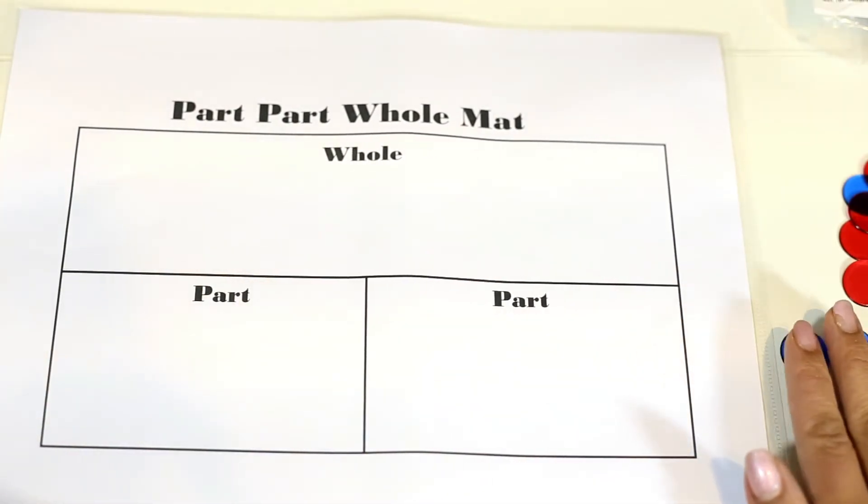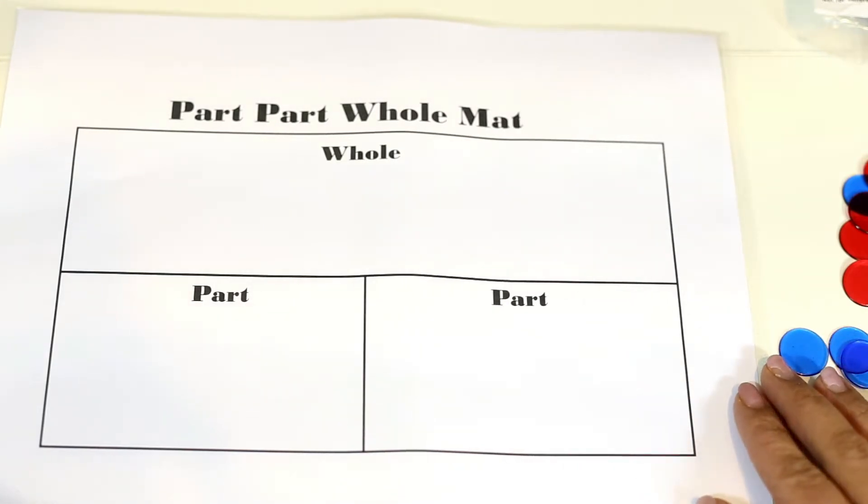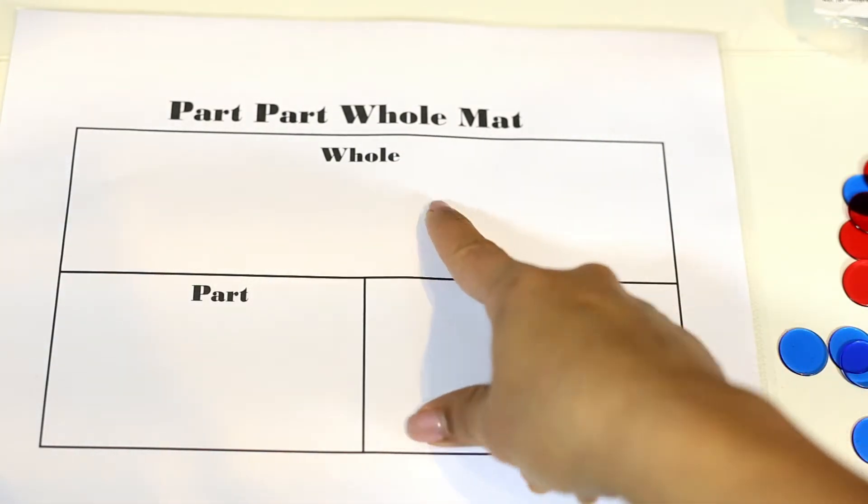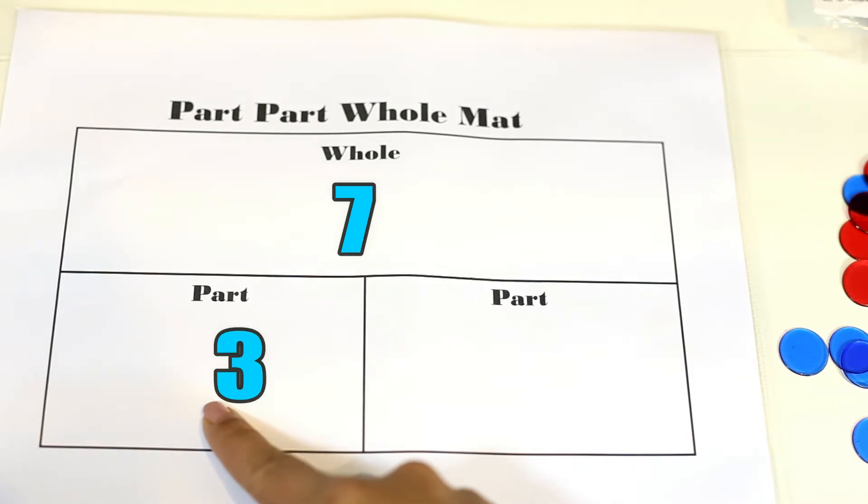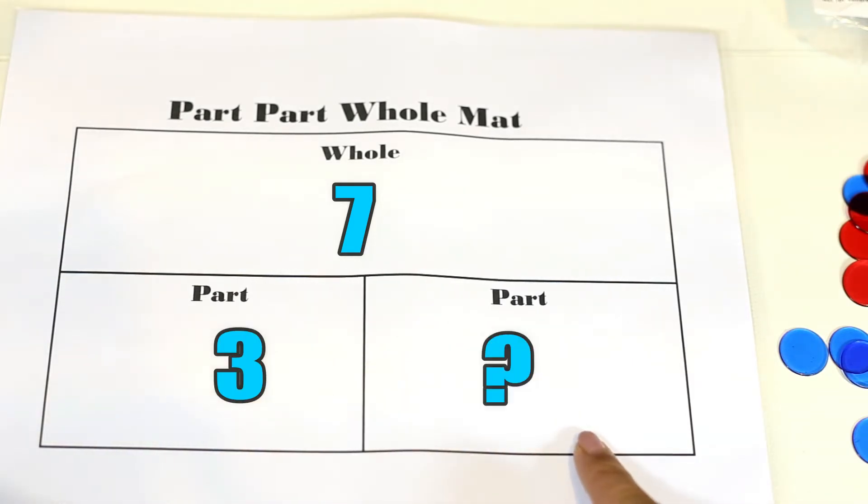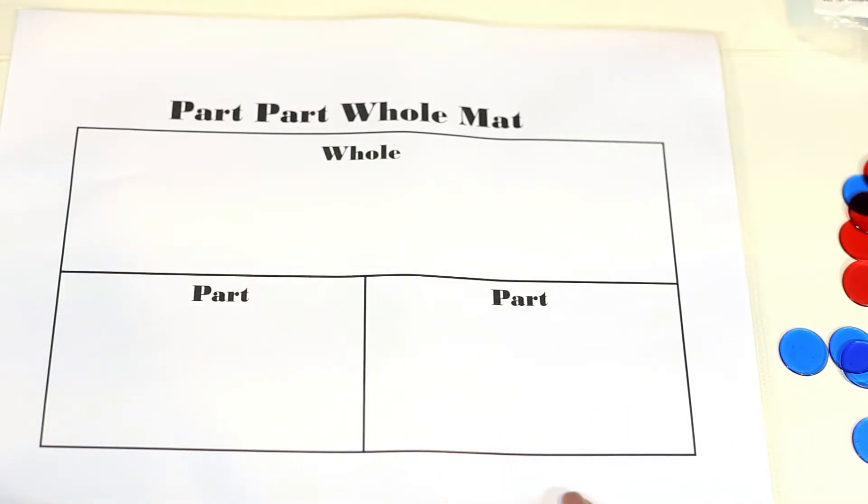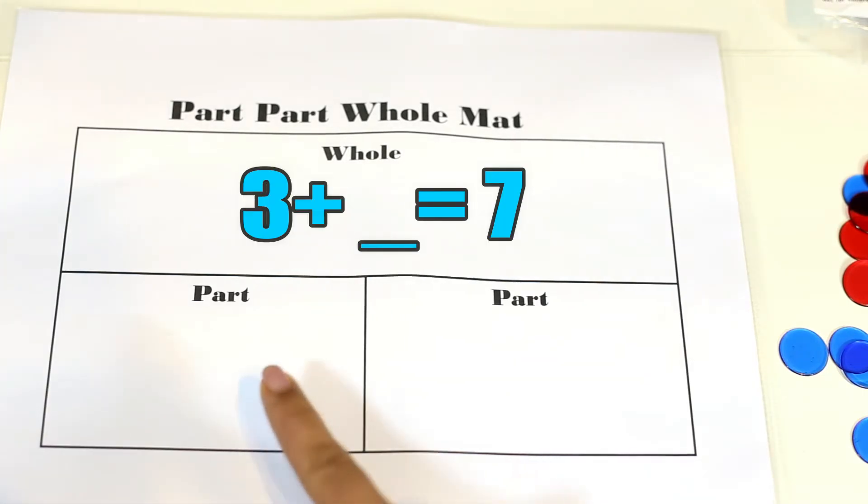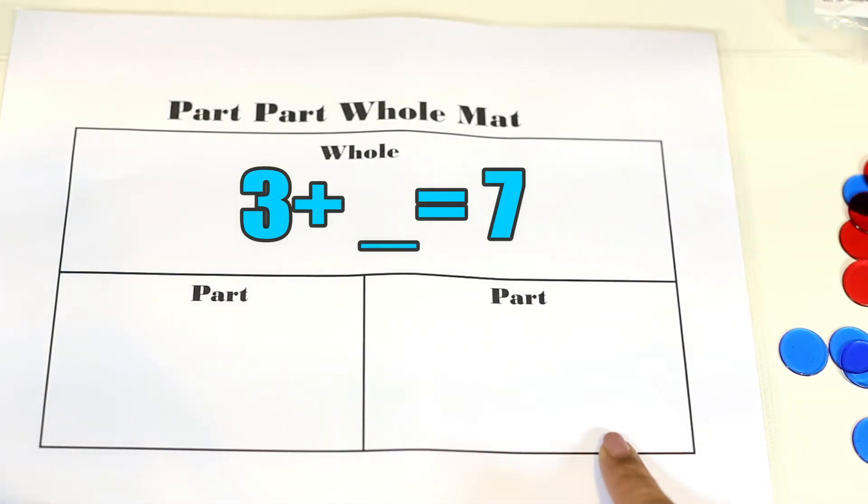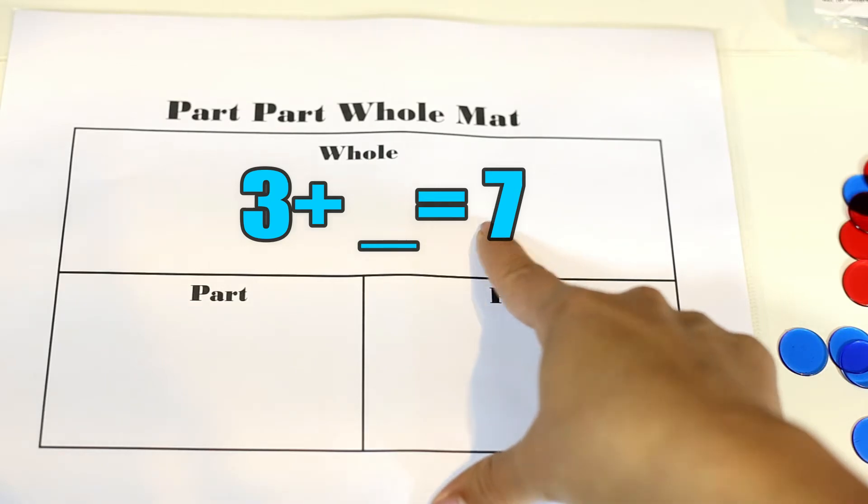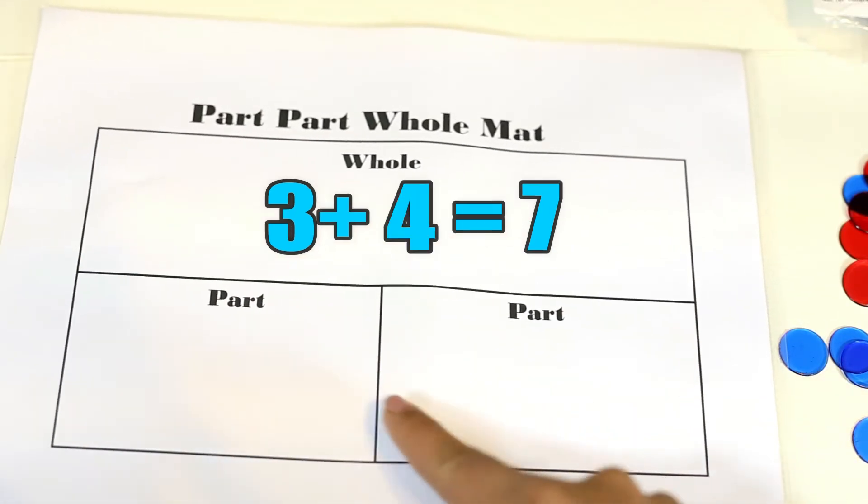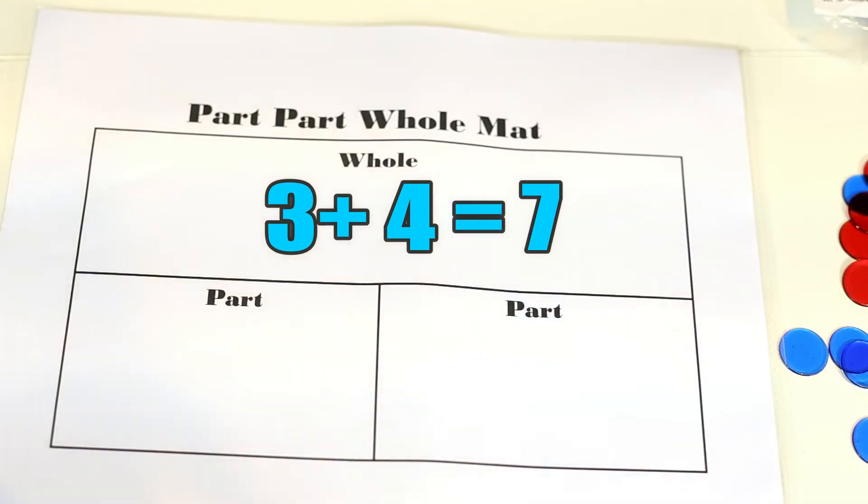Learners can write it this way. They can either write it in a subtraction problem. Seven minus three equals a part that we did not know, the unknown, which is four. Or it could actually be the missing addend to an addition problem. Three plus blank equals seven. And we found out, of course, that three plus four equals seven.